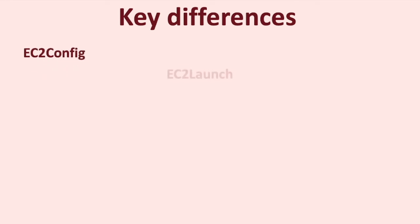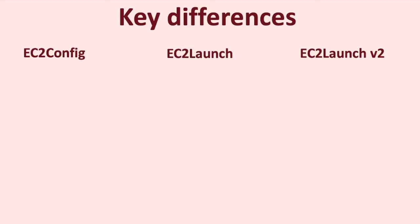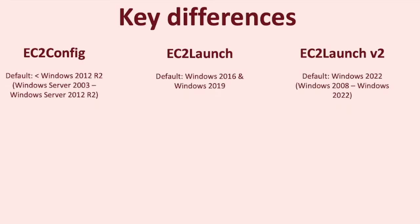There are a number of differences between these launch agents, and I will link a detailed comparison chart from the AWS public documentation in the description below. The key distinguishing points to remember are: first, the operating system support. If you use a Windows Server AMI provided by AWS, these agents are installed by default. However, the choice of agent that comes by default depends on the OS version.